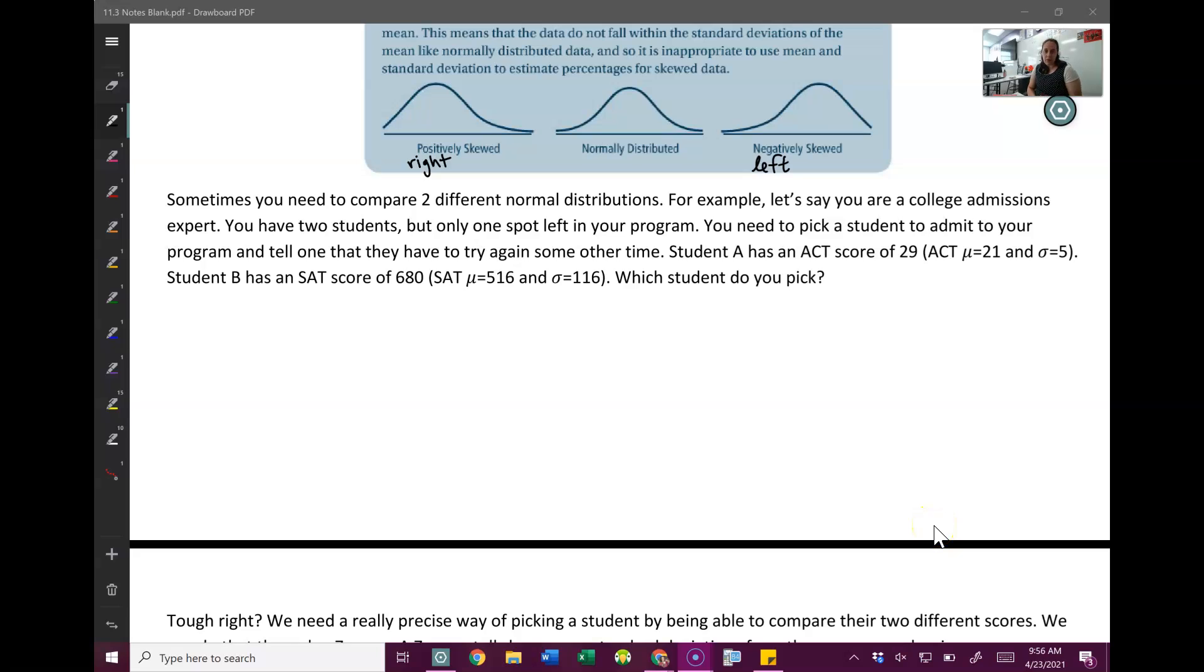Let's start to play with this idea of normal distribution. So let's do this example. We are a college admissions expert. I have two students but only one spot left in my program. So I need to pick a student to admit to my program and I have to tell one person I'm sorry you're gonna have to try some other time. So this is kind of a big decision. I'm like changing someone's life here.